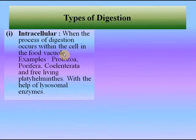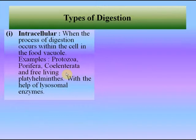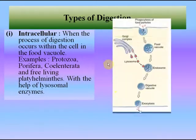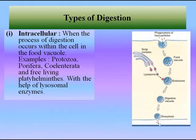Digestion is of two types. The first is intracellular digestion, which is when the process of digestion occurs within the cell in the food vacuole. Examples include protozoa, porifera, coelenterates, and free-living platyhelminthes, which use lysosomal enzymes. In intracellular digestion — also called phagocytosis — food particles are taken into the cell to be digested, and lysosomes and food vacuoles are responsible for this process.